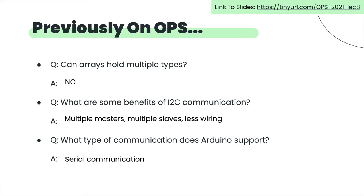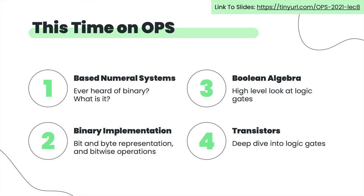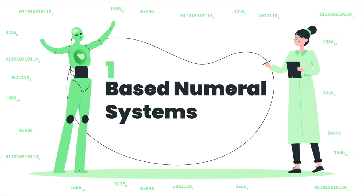This time on ops, we're going to be talking about base numeral systems. You've heard of binary — we're going to talk about that a bit. We'll also be talking about boolean algebra and how transistors can be used to create logic gates. First, we're going to start with base numeral systems.